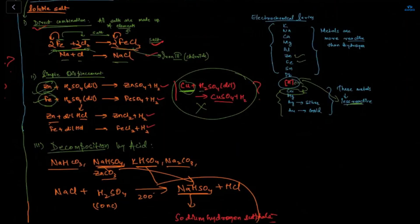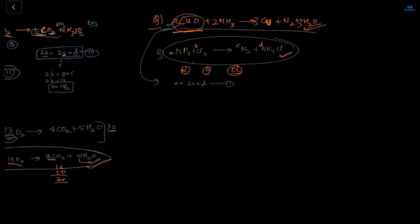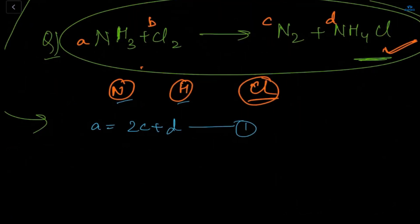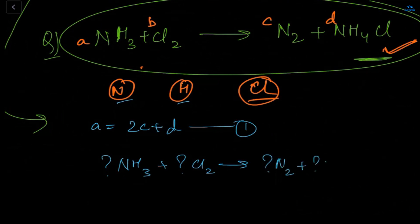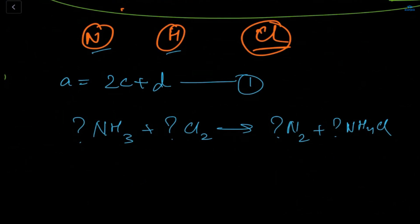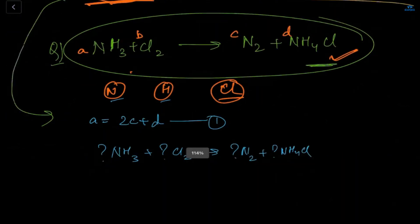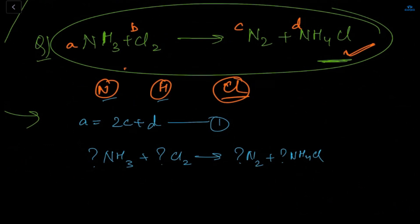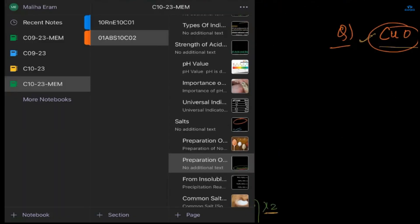The teacher asks Rudra about the final answer for NH3 + Cl2 → N2 + NH4Cl: how many NH3 and Cl2 are needed? A student mentions getting 4b/6 - 1 = c but the teacher says that's wrong — there must be a calculation error. The teacher says they'll discuss it later and wraps up the session, saying goodbye.